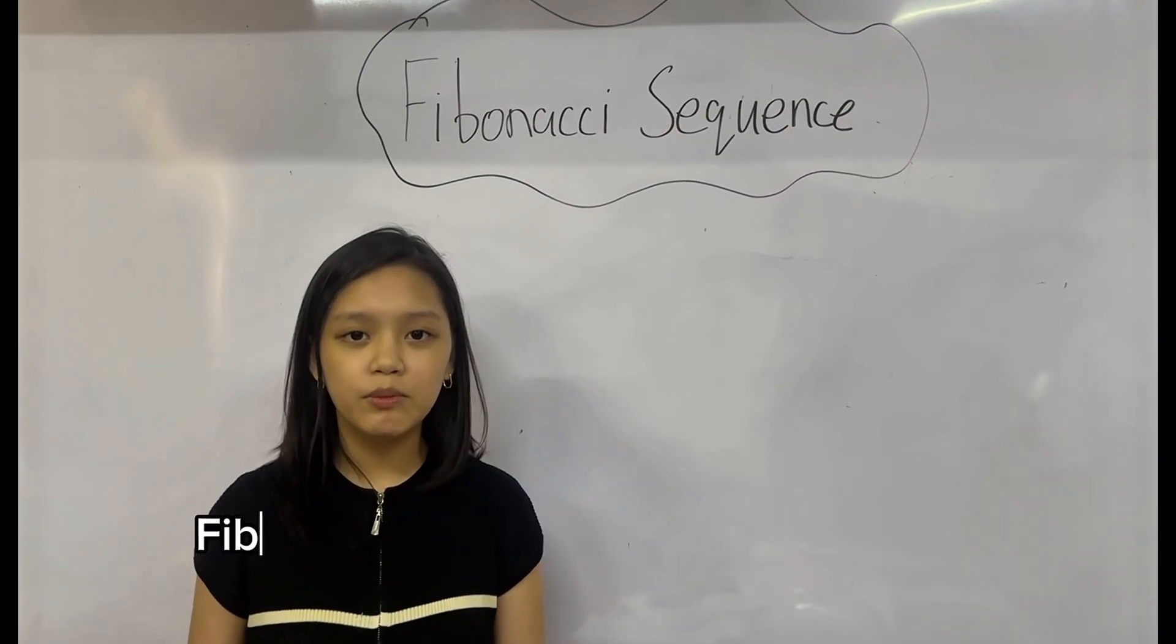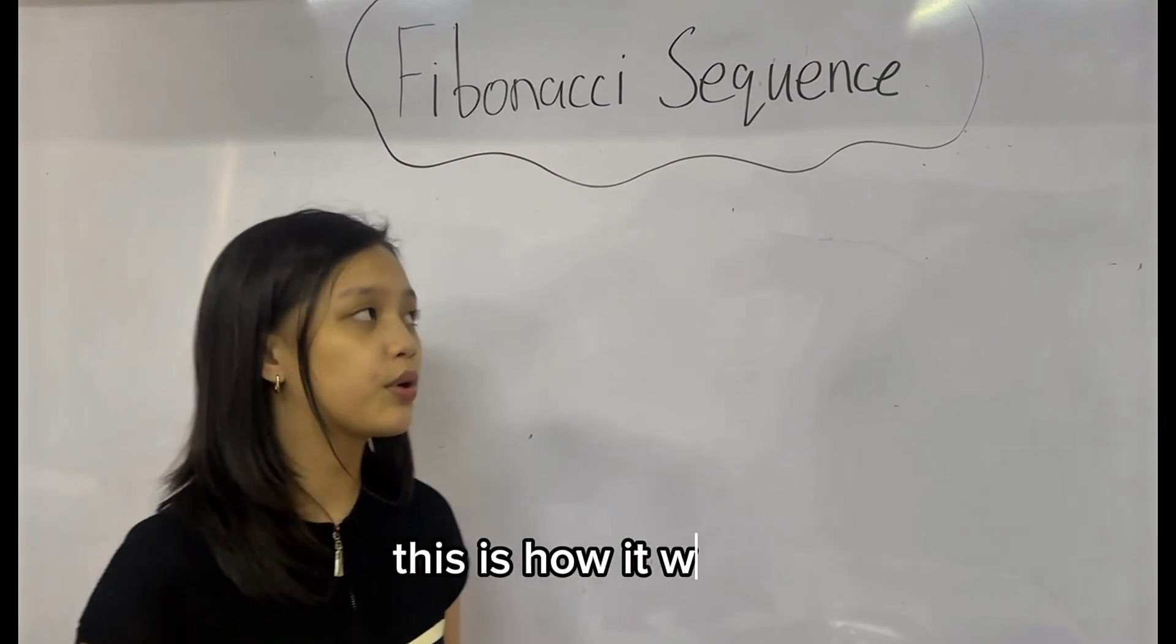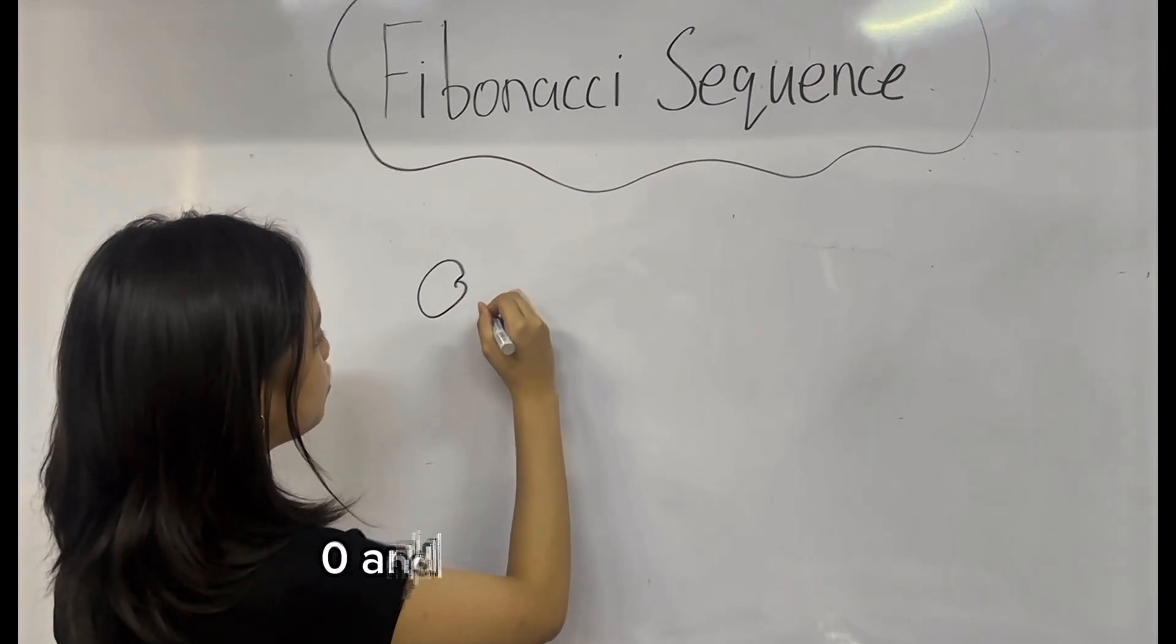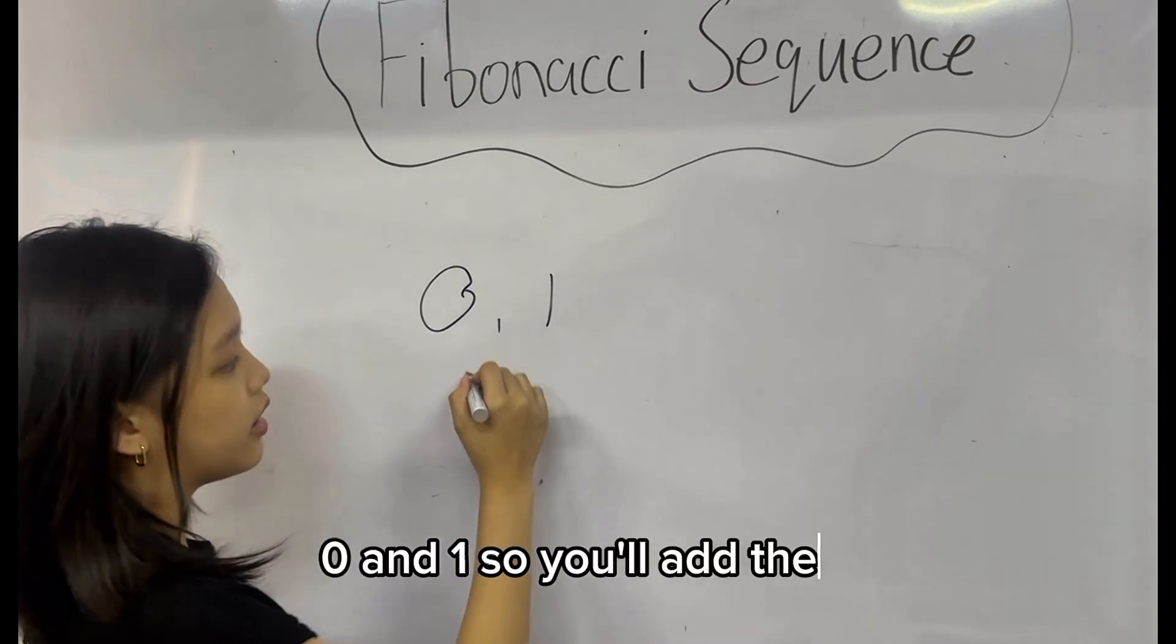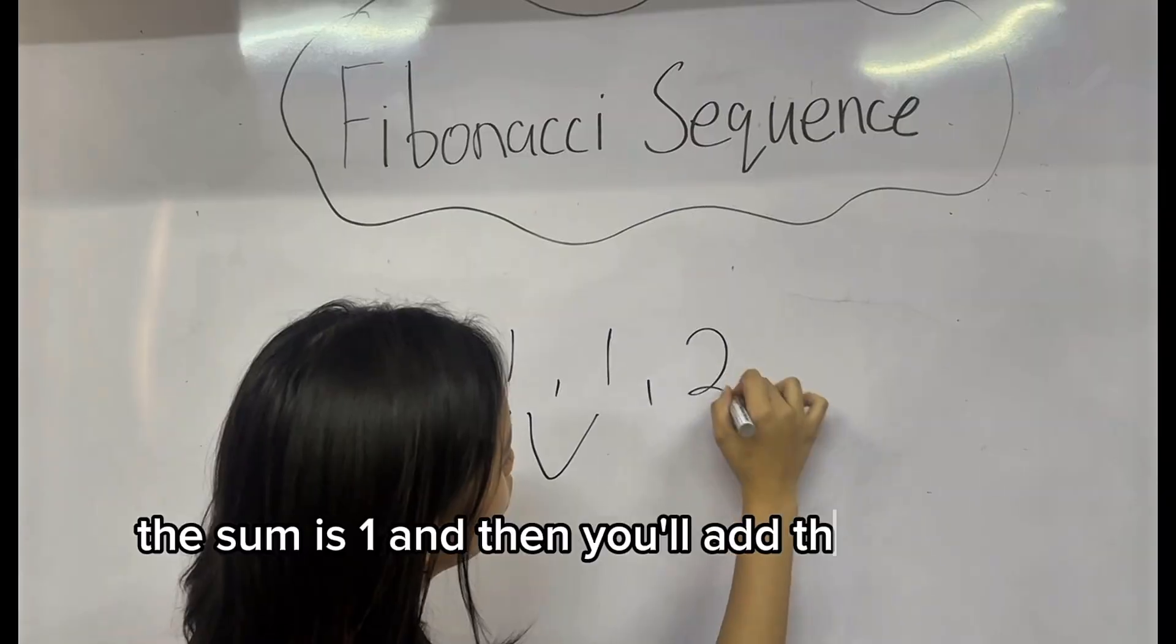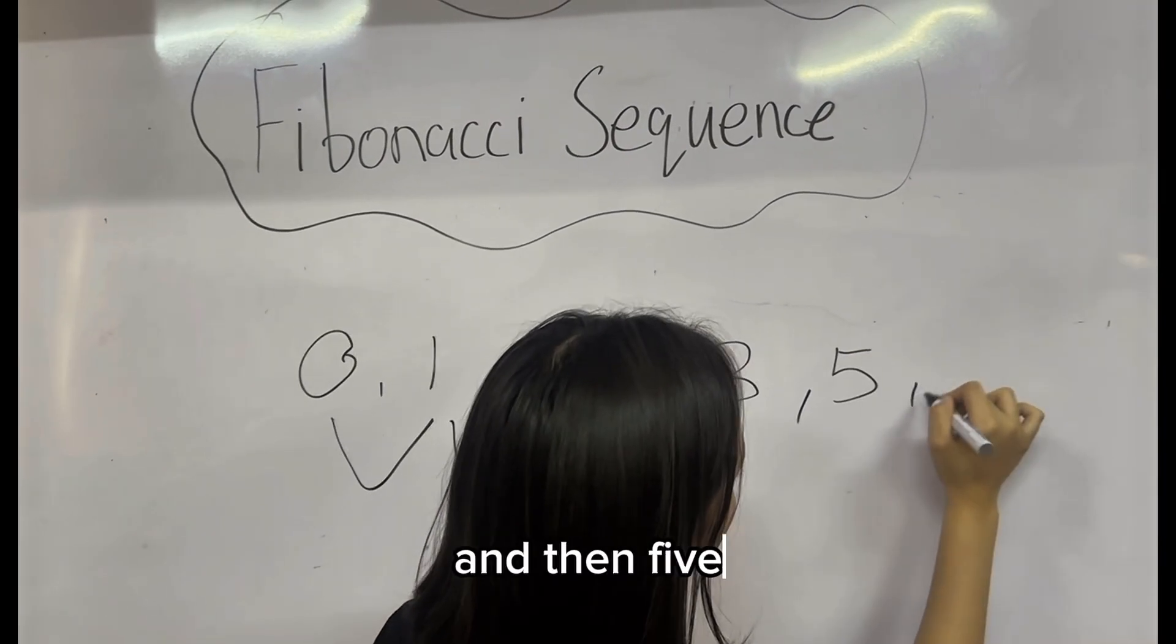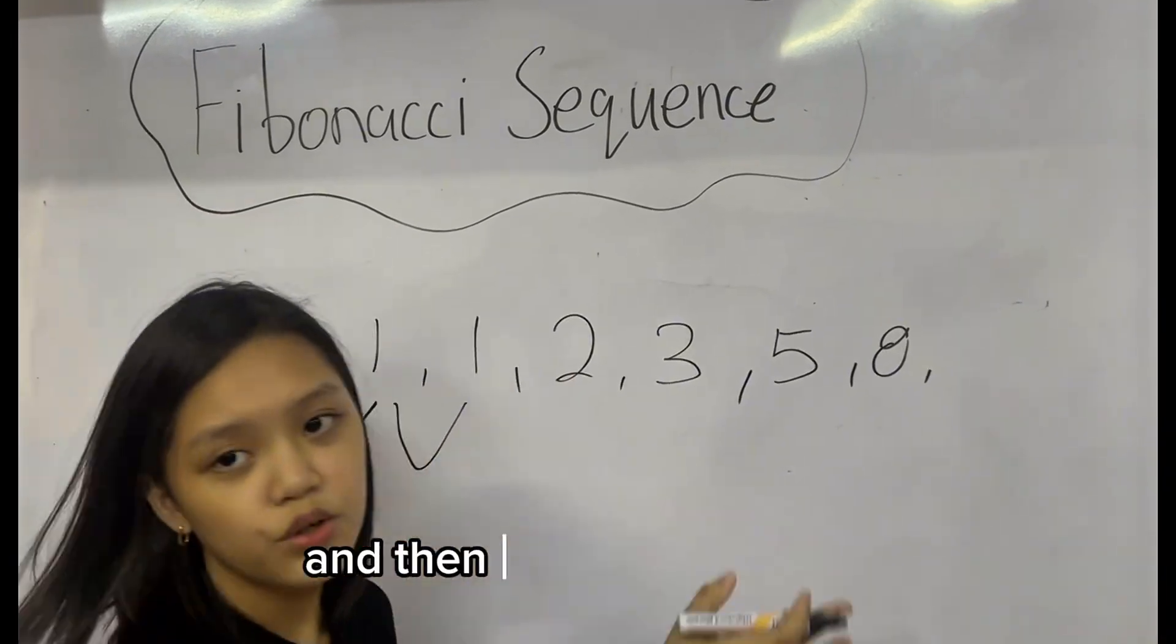The sum of the previous terms is the sum of 2 previous terms. This is how it works: 0 and 1, so you'll add them. The sum is 1 and then you'll add them: 2 and then 3 and then 5 and then so on and so forth.